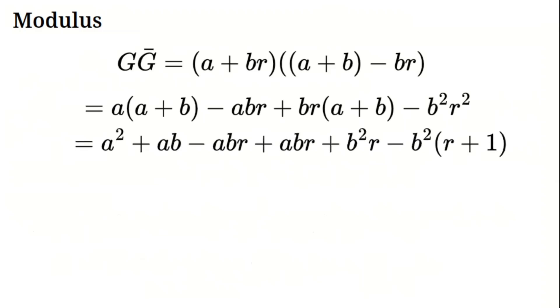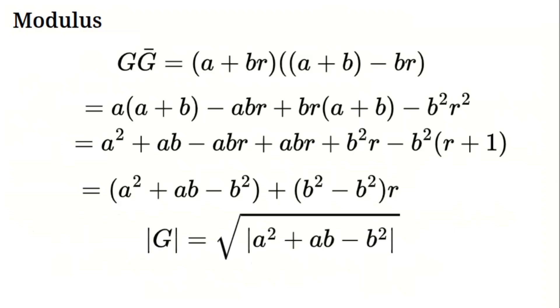Now B squared R squared is B squared times R plus 1. So negative B squared R squared is negative B squared R minus B squared. Combine. Real part is A squared plus AB minus B squared. Golden part negative ABR plus ABR plus B squared R minus B squared R equals 0. We get A squared plus AB minus B squared, a real number.